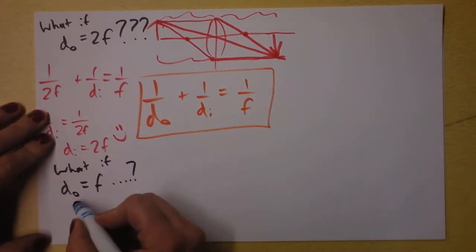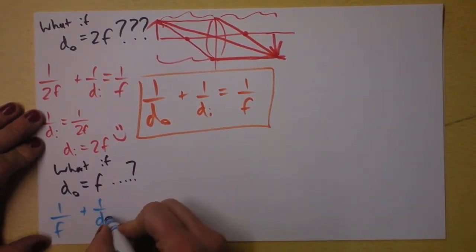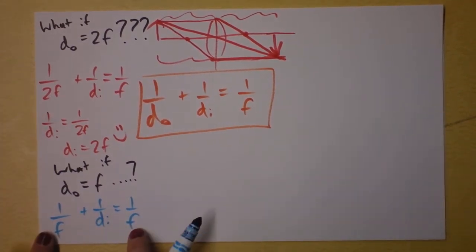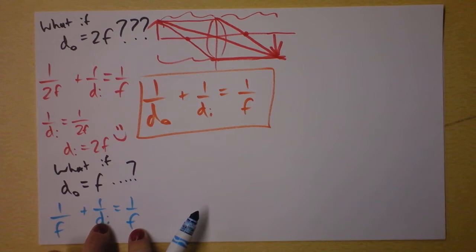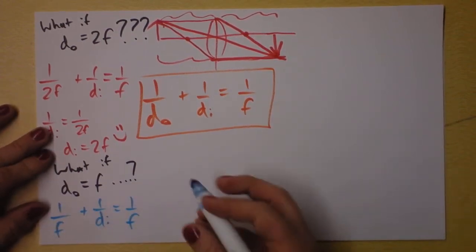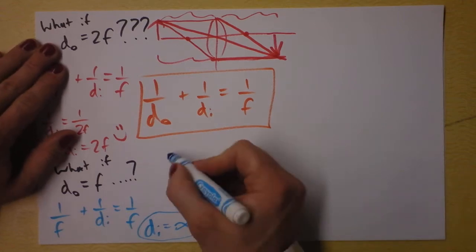So, let's do the math first. It's a little more fun. I'm going to plug in f for right there. I get 1 over f plus 1 over di is 1 over f. Uh-oh. If this side and that side are equal, then this had better not have much of a contribution. And the only thing I can divide one by to get exactly zero is infinity. So we're going to say that the distance of the image is at infinity in that case.